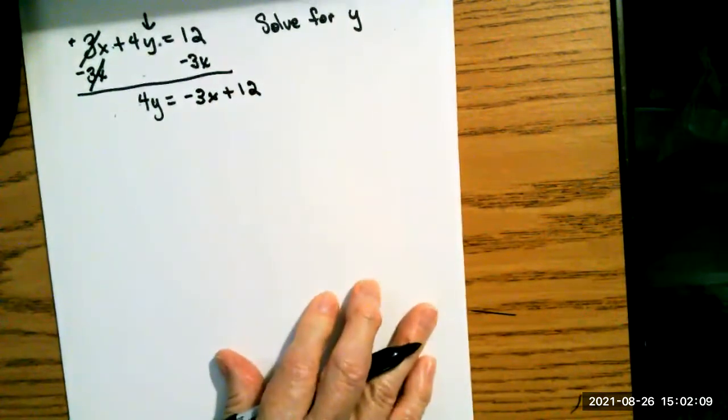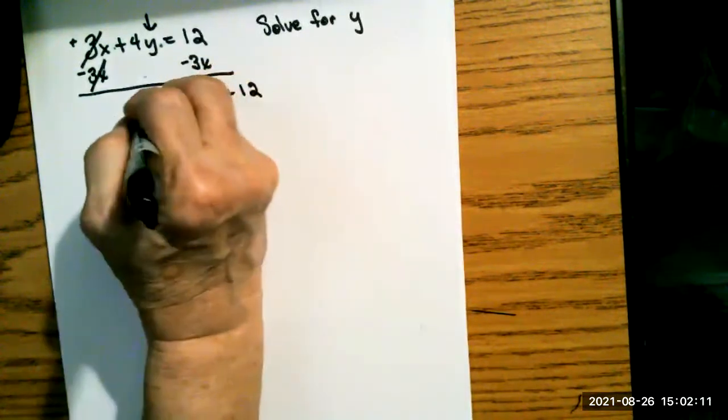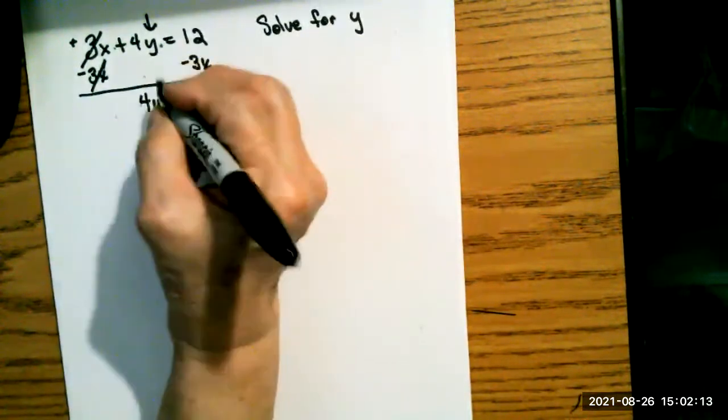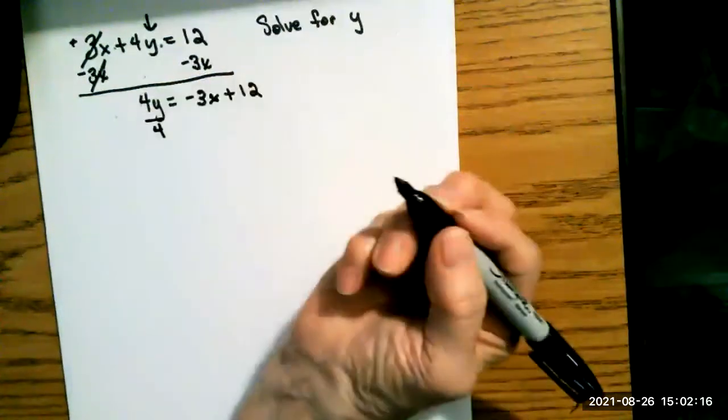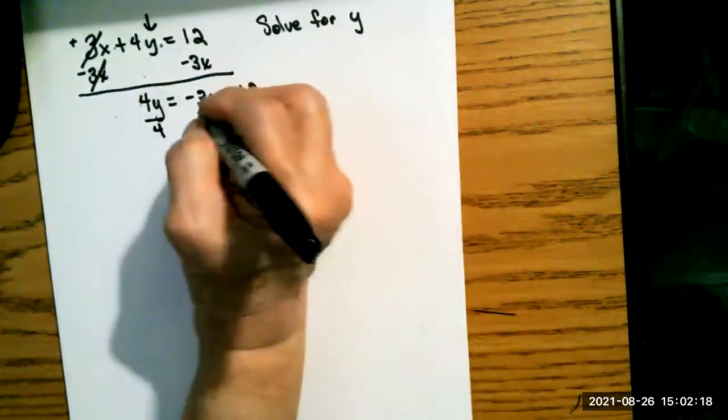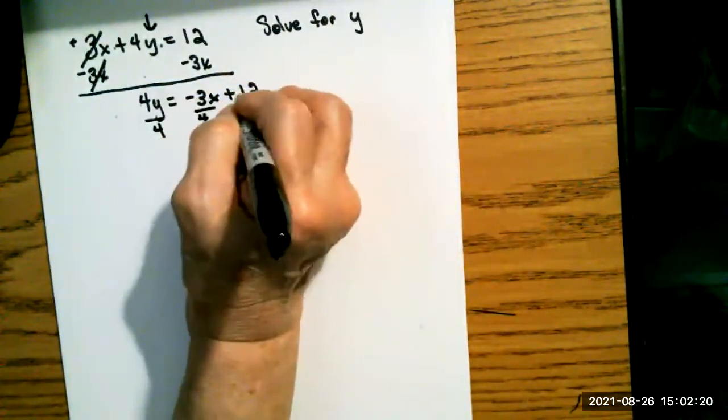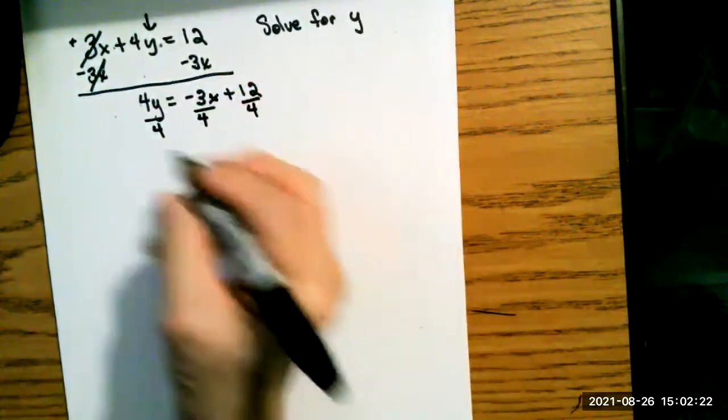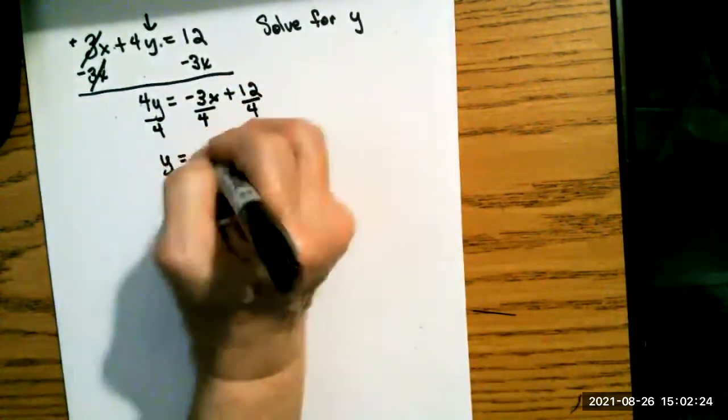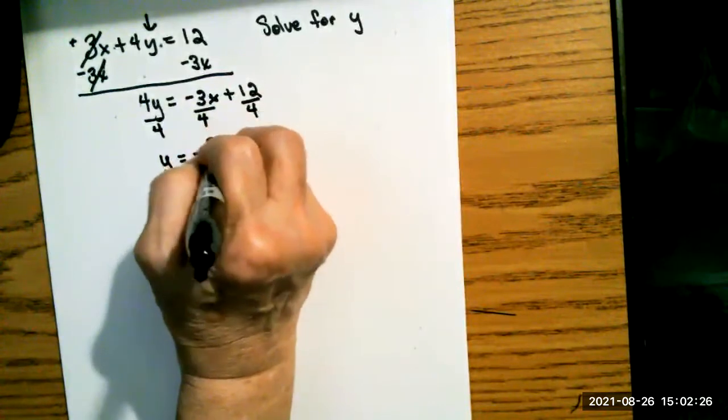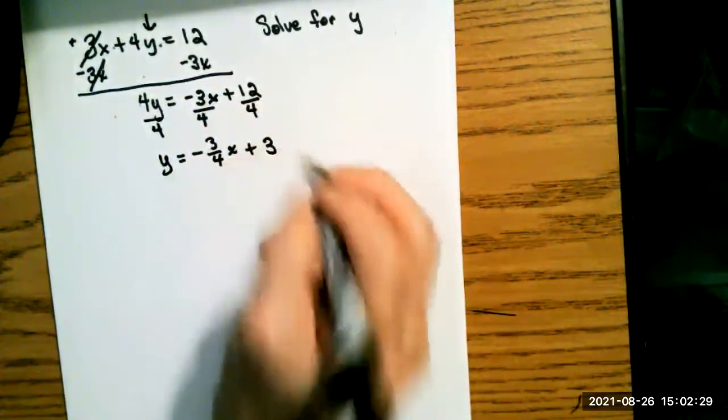Now I'm almost finished. When I solve for y, I need to not have 4y, I need to have y. So 4 is multiplied by y. The inverse operation is division. So I'll divide by 4. So I'll have y equals negative 3 fourths x plus 3.